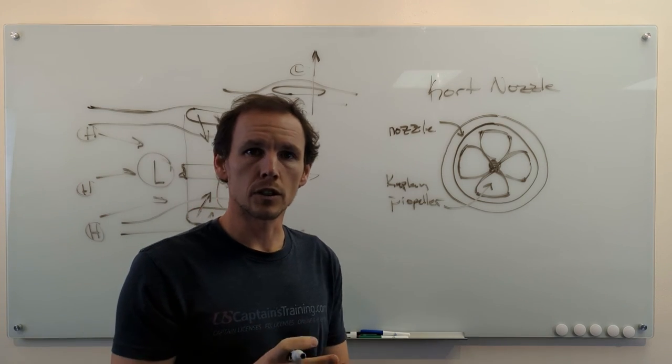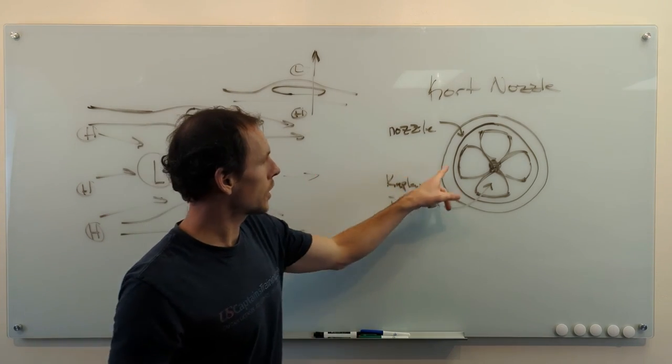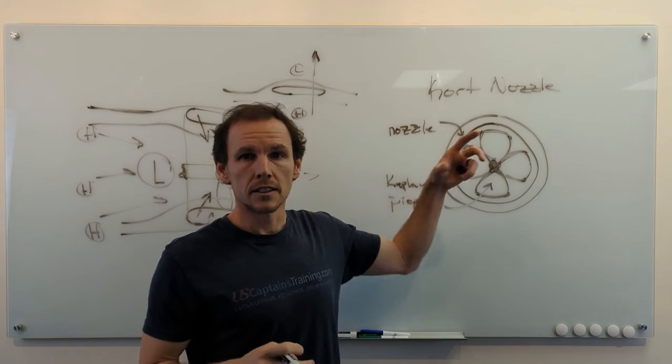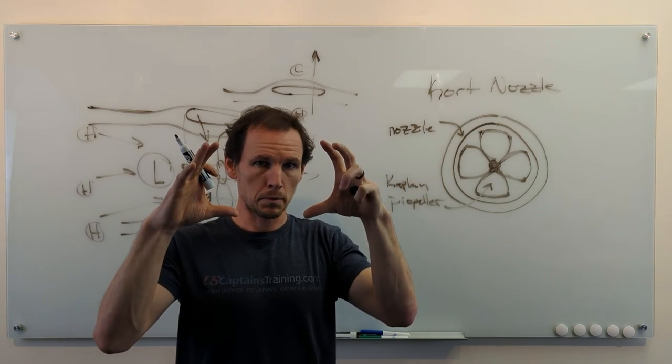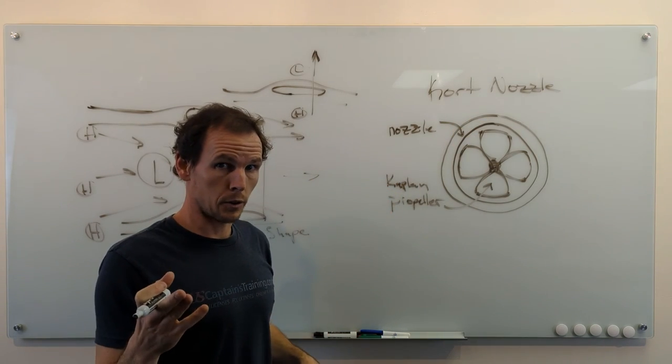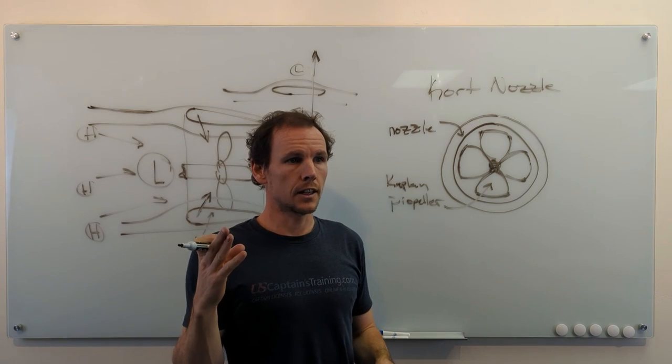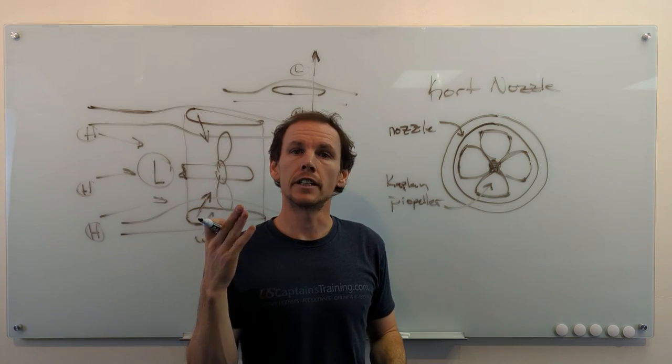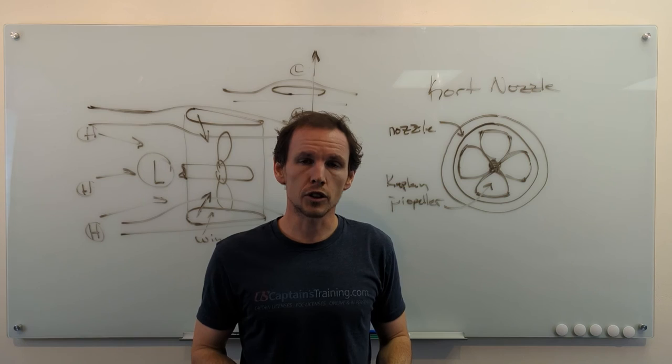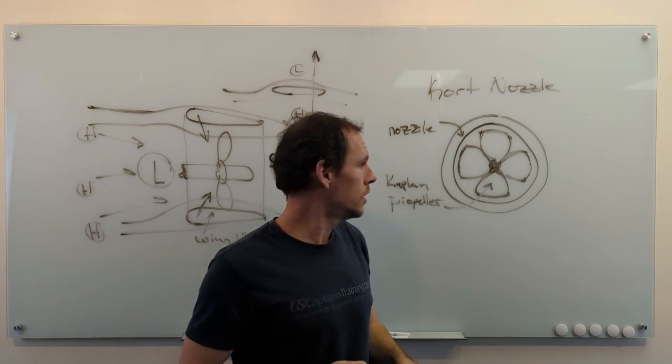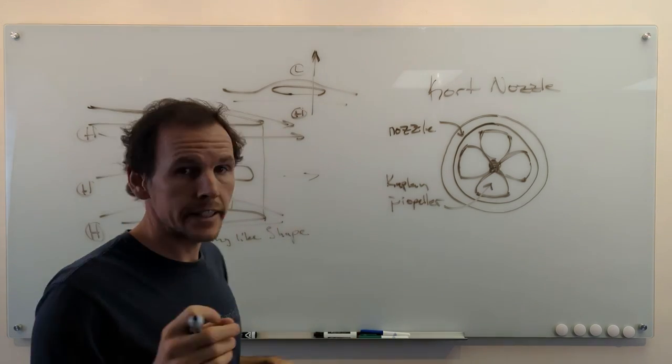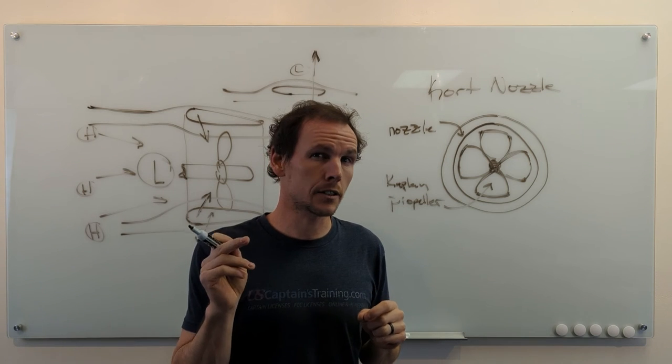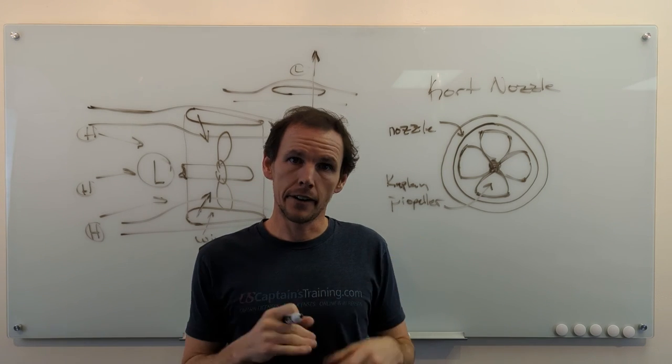It's generally on towboats, tugboats. The Coast Guard describes it as a steel structure around a propeller. Another Coast Guard question you'll see just says it's installed on tugboats and towboats to create more thrust. So that is a kort nozzle or ducted propeller in a nutshell.